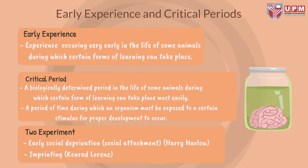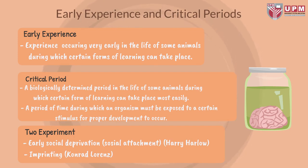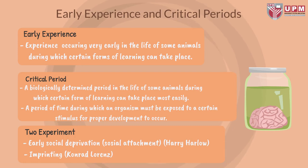Early experience refers to experiences occurring very early in the life of some animals during which certain forms of learning can take place. A critical period is a biologically determined period during which certain forms of learning can take place most easily — a time during which an organism must be exposed to a certain stimulus for proper development to occur. Two key experiments relate to this: early social deprivation and social attachment studied by Harry Harlow, and imprinting studied by Konrad Lorenz.